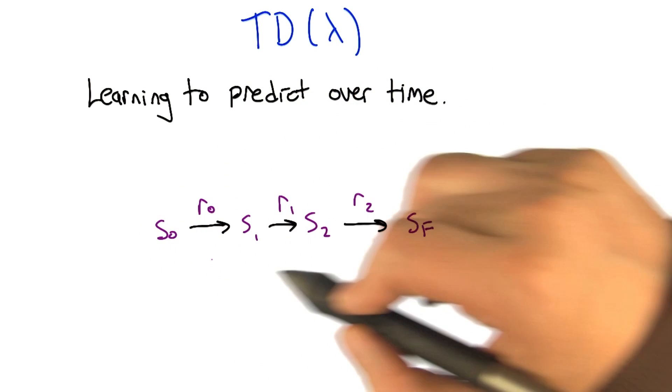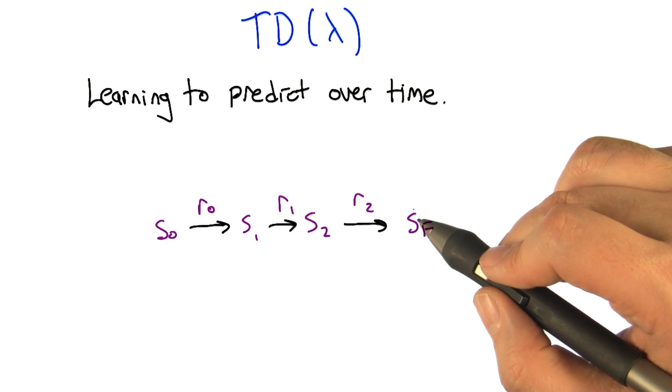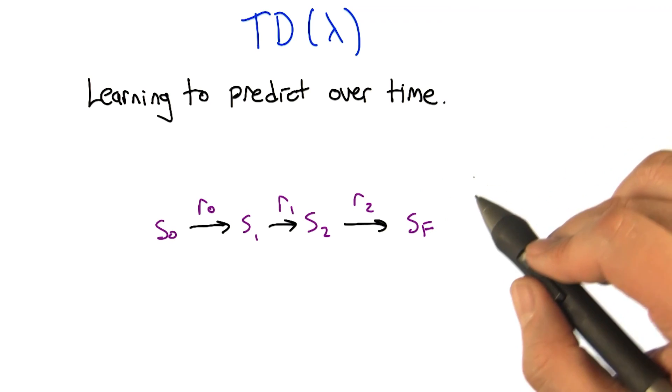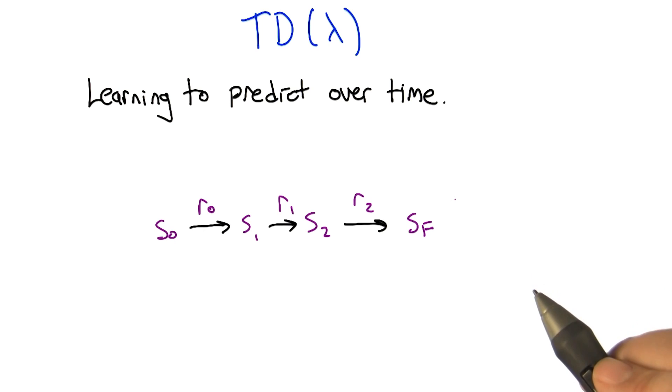This is going to be a really important subroutine for reinforcement learning, because we're going to use the notion that we can predict future rewards to try to better choose actions to generate high rewards.